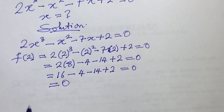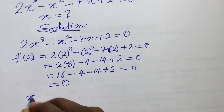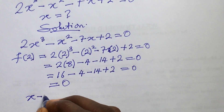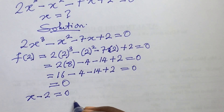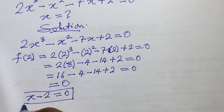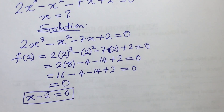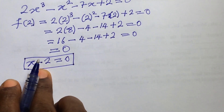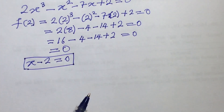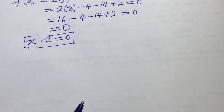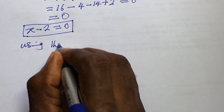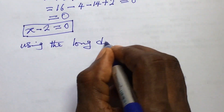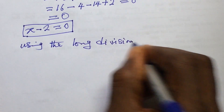Therefore we discover that (x - 2) = 0 is one of the factors of this polynomial equation. We've found one root. The next step is to use this root to divide the polynomial using the long division method.